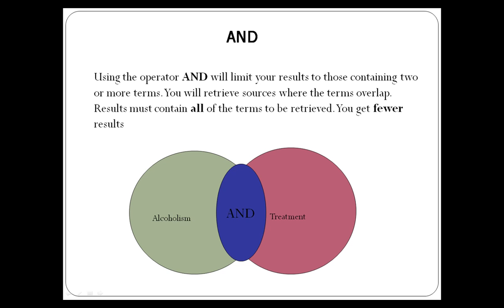Using the operator AND will limit your results to those containing two or more terms. You will retrieve sources where the terms overlap, and results must contain all of the terms to be retrieved. You get fewer results.